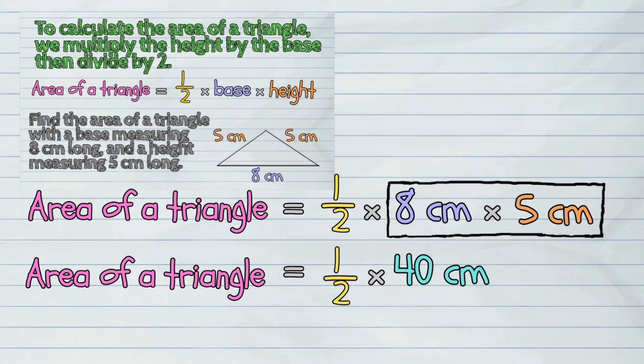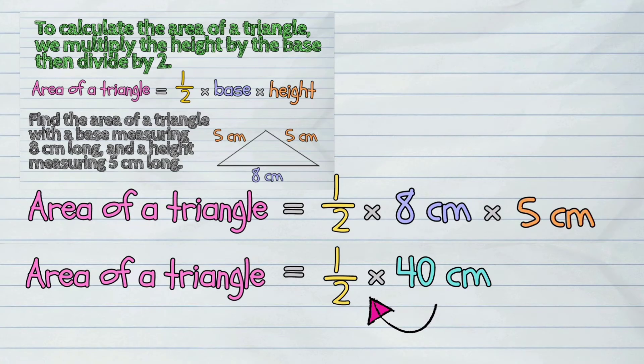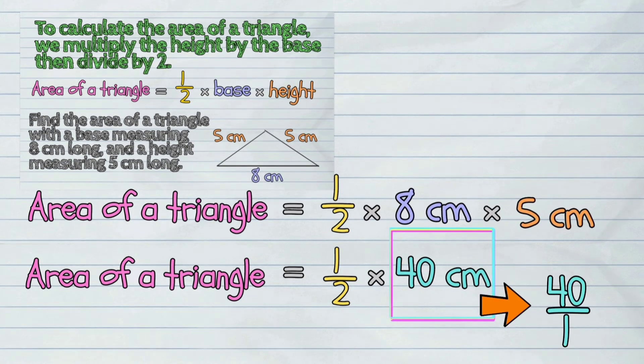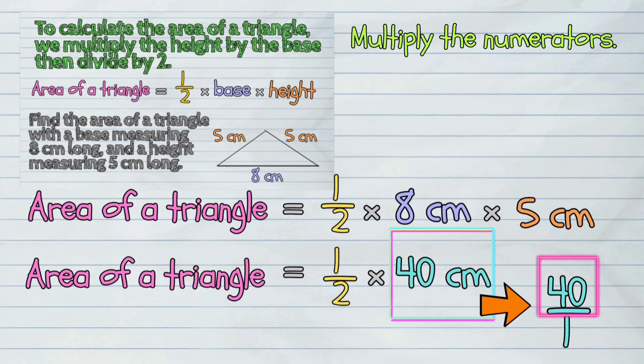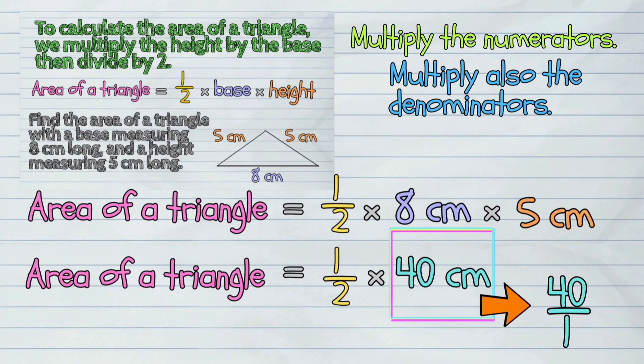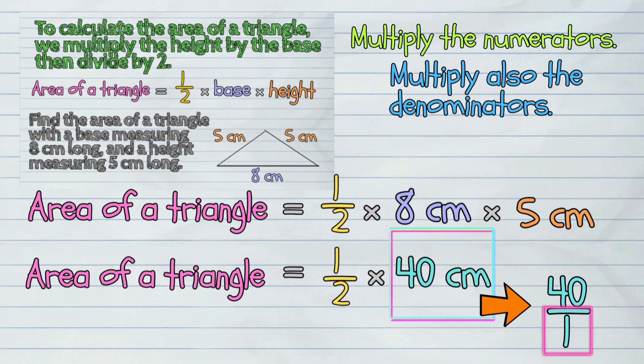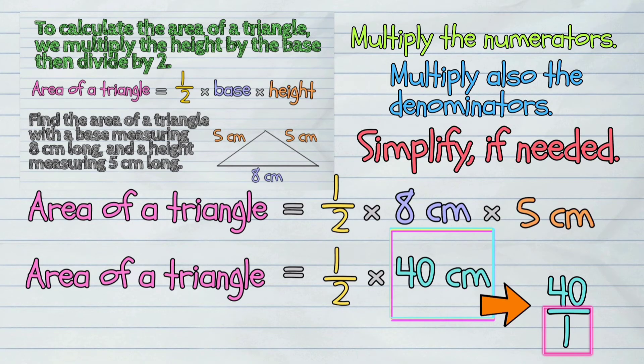Next, we will multiply forty by one-half. In multiplying a fraction and a whole number, we just have to write the whole number as a fraction with a denominator of one. Then, multiply the numerators and multiply the denominators. Simplify if needed.